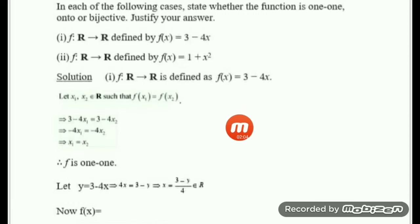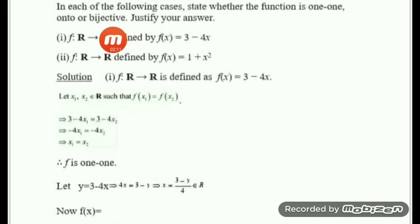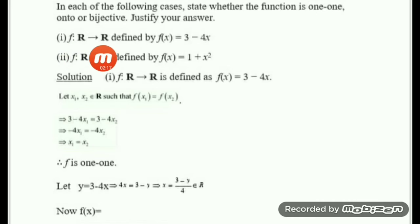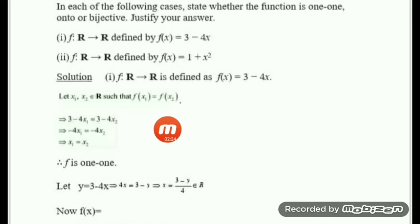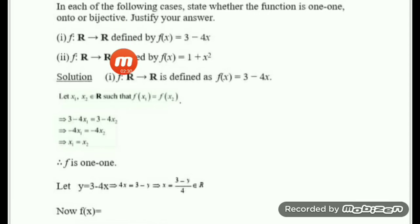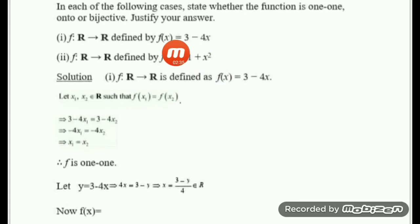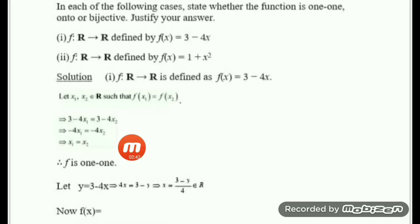For an onto function, we have to consider an element y in the codomain, then show there exists an element x in the domain such that f(x) = y. For that purpose, we consider y in the codomain. We replace f(x) by y, so y = 3 minus 4x.